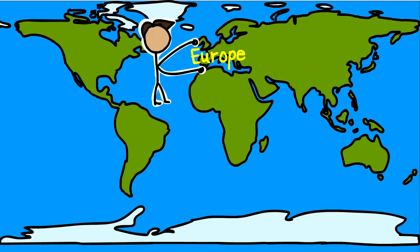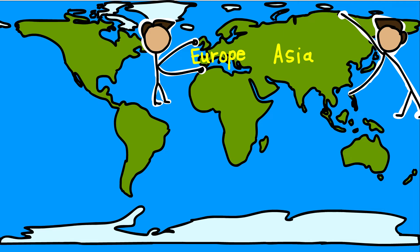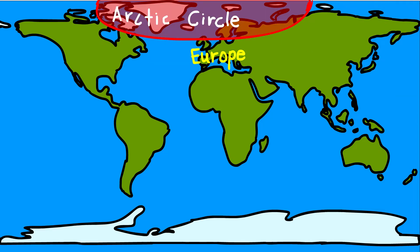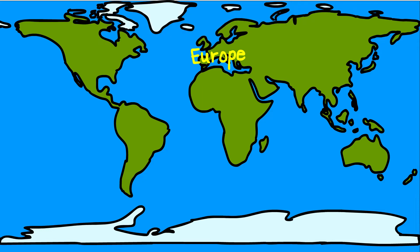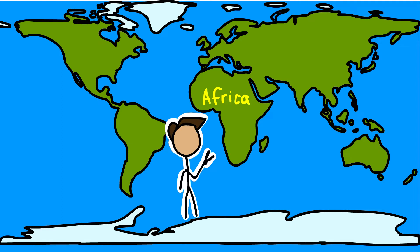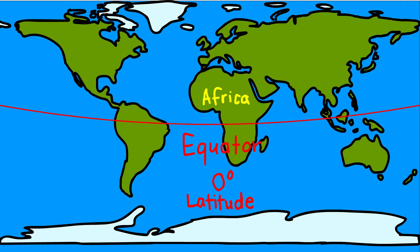Europe is much smaller than Asia. The continent lies to the west of Asia. The Arctic Circle passes through it, and it is bound by water bodies on three sides. Africa is the second-largest continent after Asia. The equator, or zero degrees latitude, runs almost through the middle of this continent.